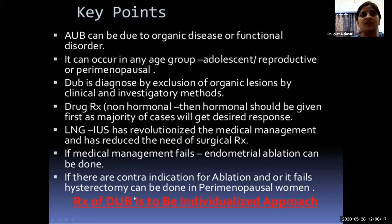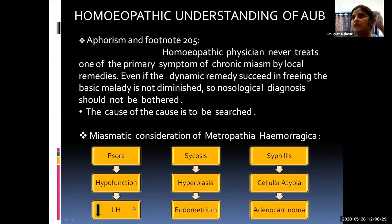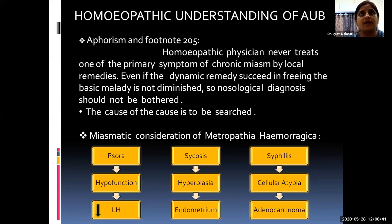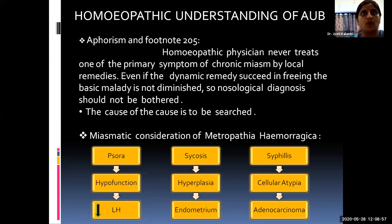Now, the very important part — homeopathic management. We encounter cases of metropathia hemorrhagica regularly in day-to-day practice and must understand the miasmatic background. A thorough, artistic, and scientific case-taking is essential. The homeopathic approach is holistic — every symptom and sign is important for treatment. According to aphorism and footnote 205, a homeopathic physician never treats one primary symptom of a chronic miasm by local remedies alone, as this does not constitute complete cure.